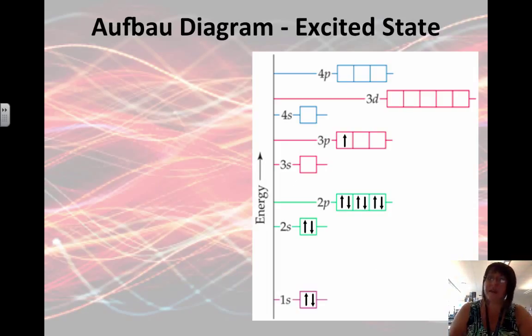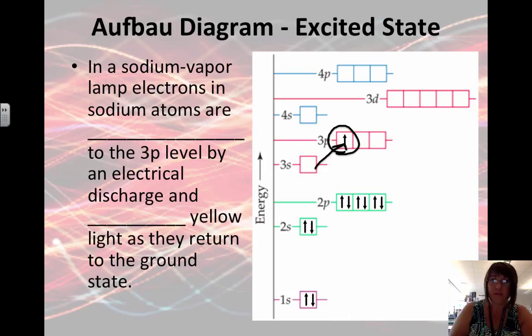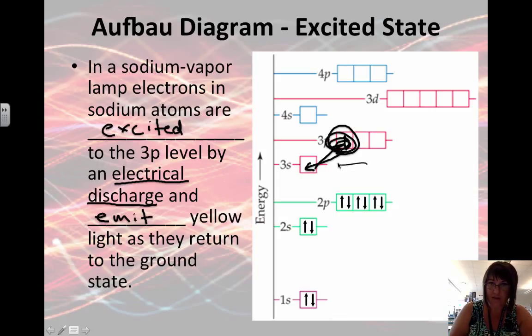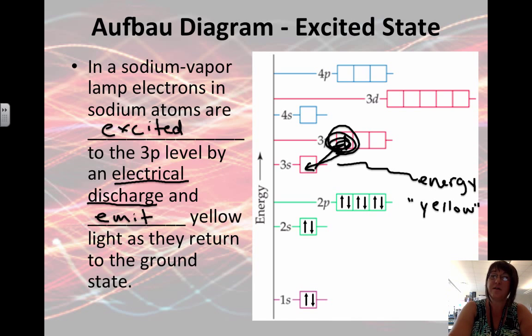Sometimes you'll see a diagram in the excited state. For example, this electron has moved out of the 3s and all the way up to a 3p. This represents an element called sodium. In a sodium vapor lamp, the electrons of the sodium are promoted to the 3p level because they get excited by an electrical discharge. We send electricity through it and that causes their energy to increase. So they emit yellow light as they return from where they got promoted to. A lot of street lights or headlights on cars use sodium vapor, and that's why they appear to have a yellowish color.